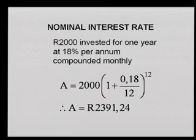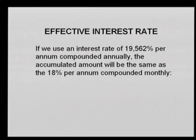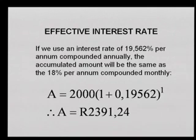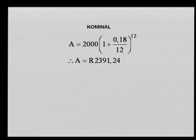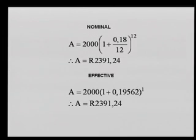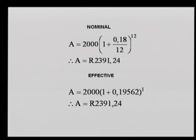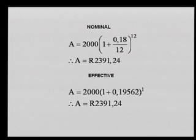Let's look at the formula once again. Isn't this beautiful? You can see the nominal and the effective — it all comes together, summarizing everything we've done. You can see 18% over 12 to the power of 12 giving your effective rate. And of course, we needed a formula, and this is the magnificent formula that we've just derived.